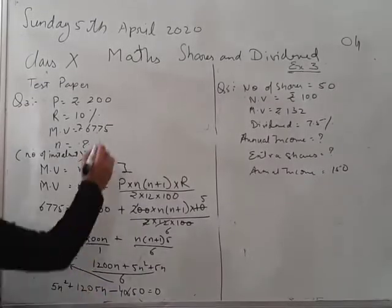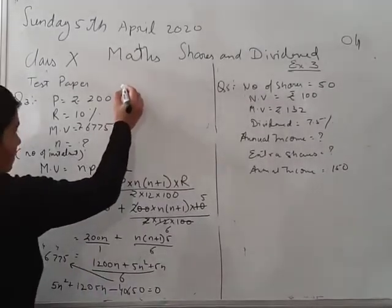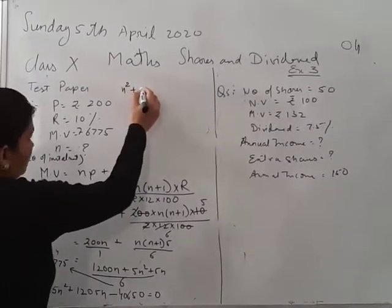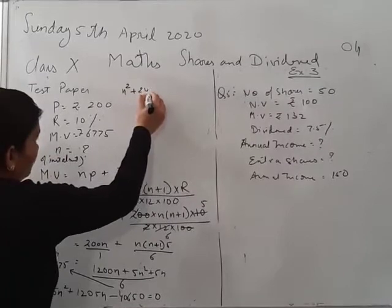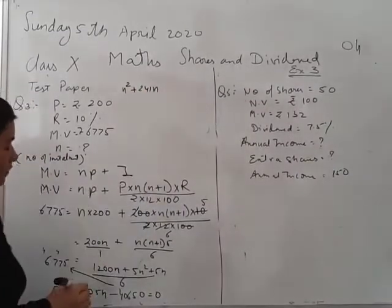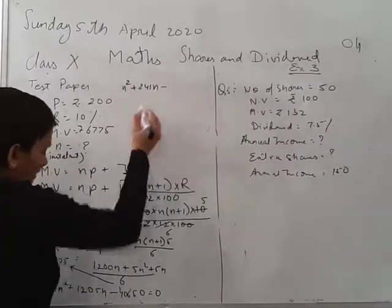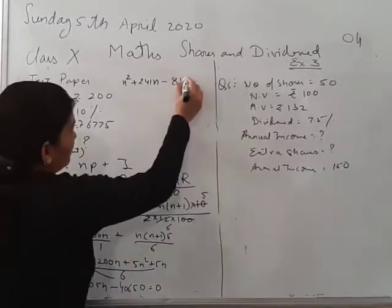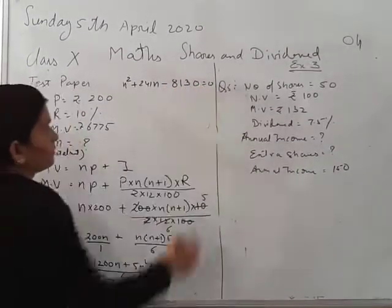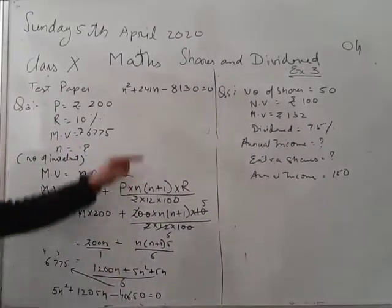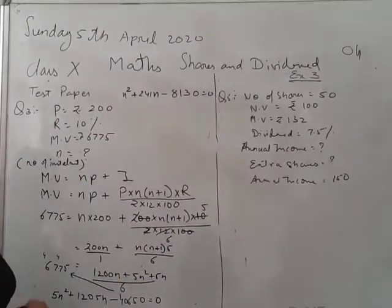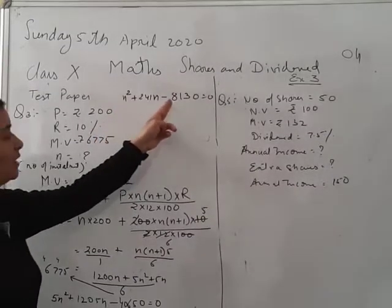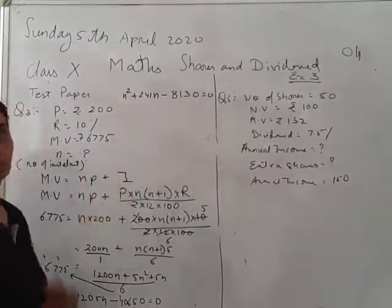Now you know that 5 is common here, so we will divide the entire equation by 5 to simplify. After dividing we get the equation N² plus 241N minus 8130 equals 0. This is the final quadratic equation.